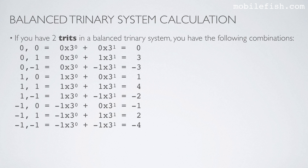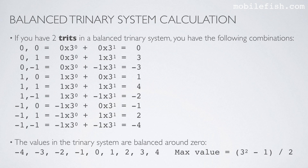If you have 2 trytes in a balanced trinary system, you have the following combinations. These are the trytes, and these are all the combinations you can create with 2 trytes. These are the corresponding decimal values. You will notice you have positive and negative values: 1 and minus 1, 2 and minus 2, 3 and minus 3, and 4 and minus 4. The values in the trinary system are balanced around 0. In this example using 2 trytes, the maximum value is 4, calculated as 3 to the power of 2, minus 1, divided by 2.